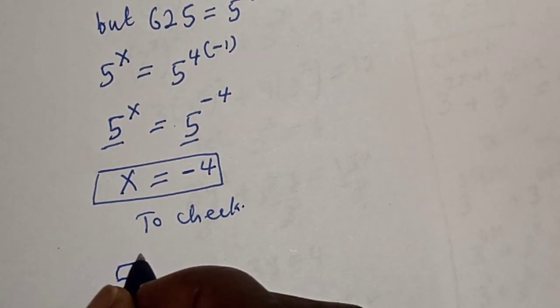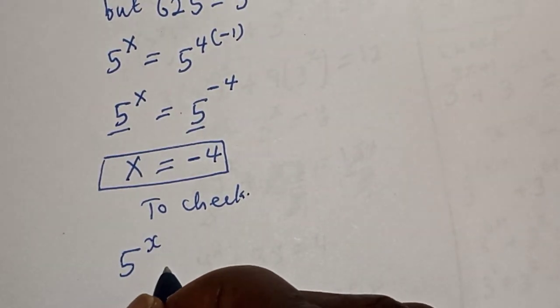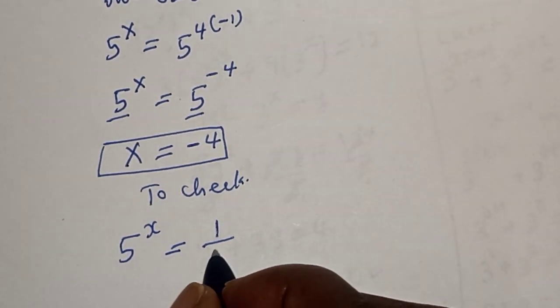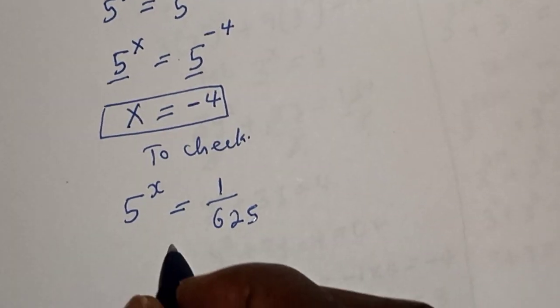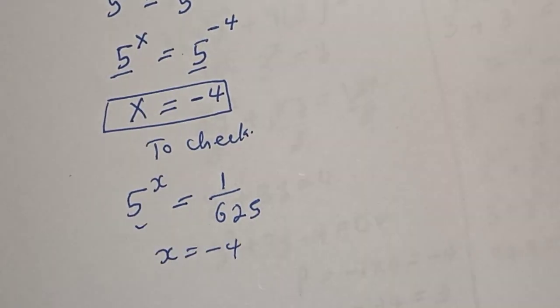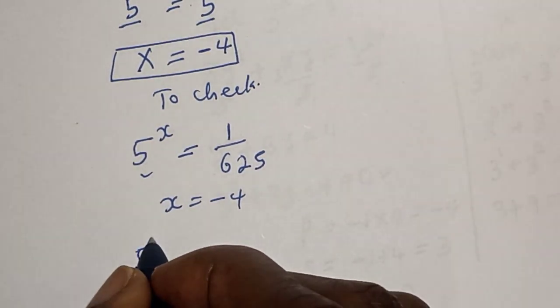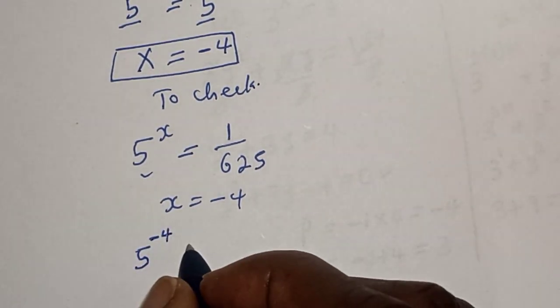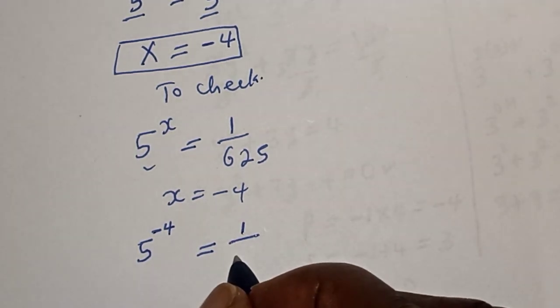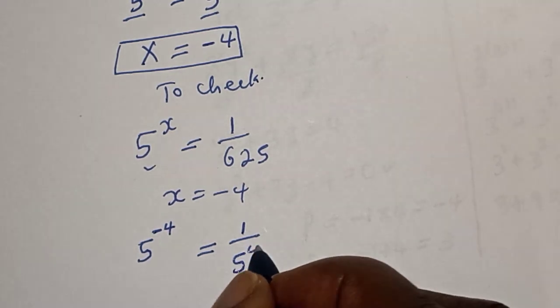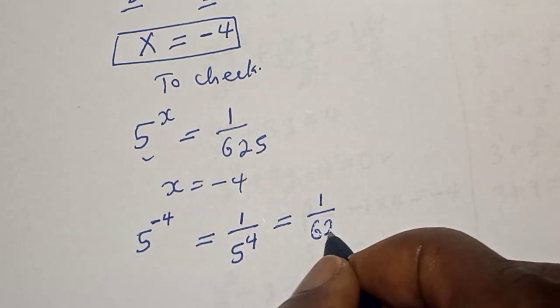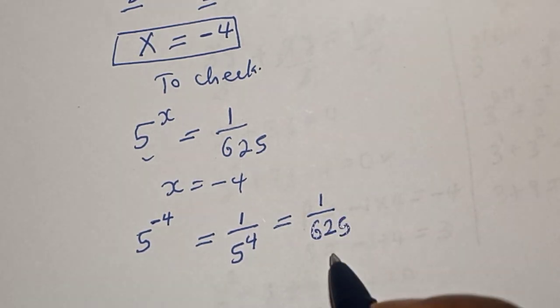We can check to confirm if our answer is right or wrong. To check, we have 5 to the power of x must be equal to 1 over 625, and x is equal to minus 4. The left hand side is 5 raised to power minus 4.